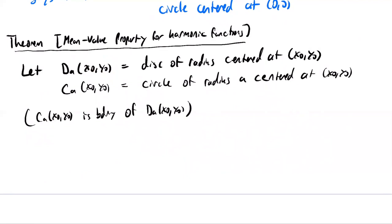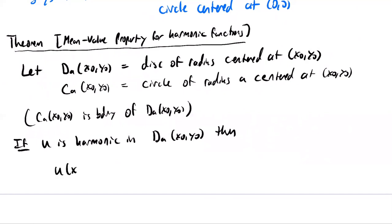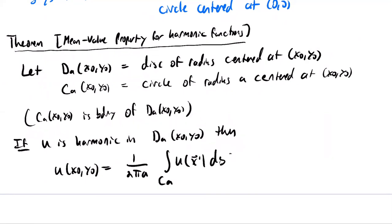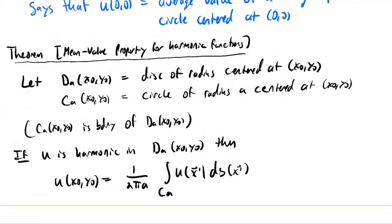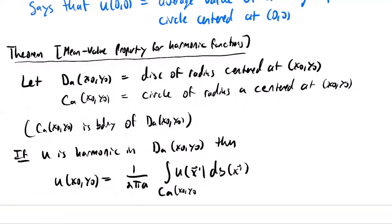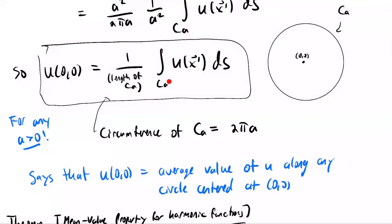Let D_a(x0, y0) be a disk of radius a centered at the point (x0, y0), and let C_a(x0, y0) be the circle of radius a centered at the same point — so C_a is the boundary of D_a. The theorem is: if u is harmonic in this disk, then u(x0, y0) = (1/(2pi·a)) times the line integral on C_a of u(x') ds. This is the same formula as before, but now allowing any center point.